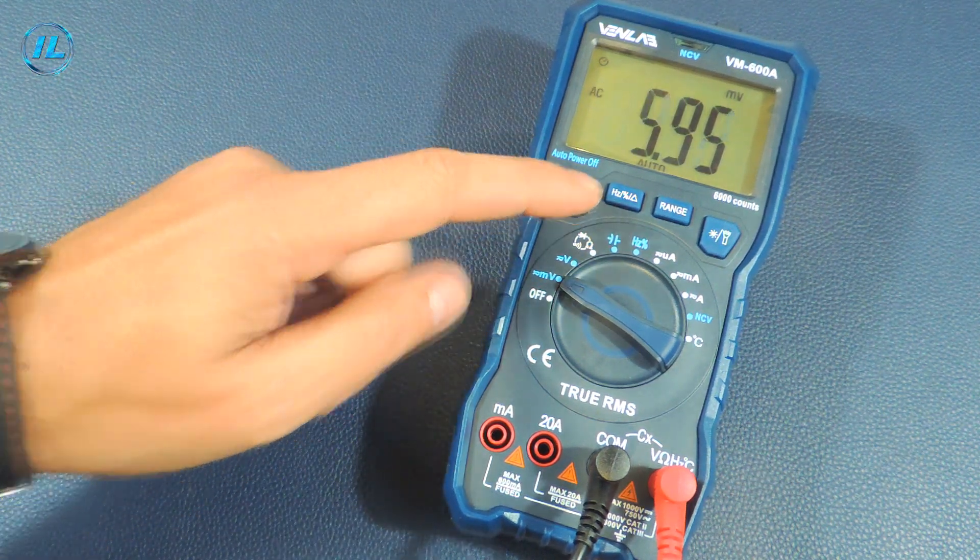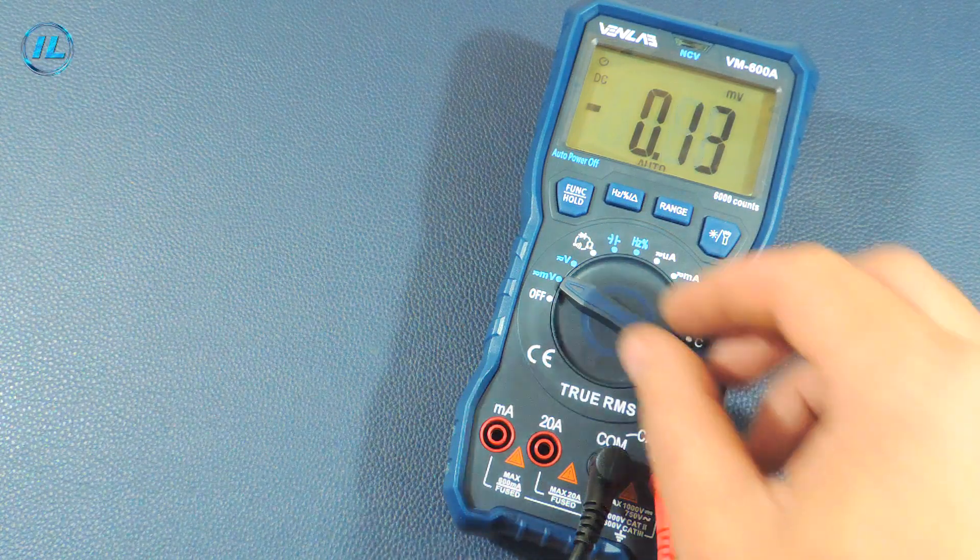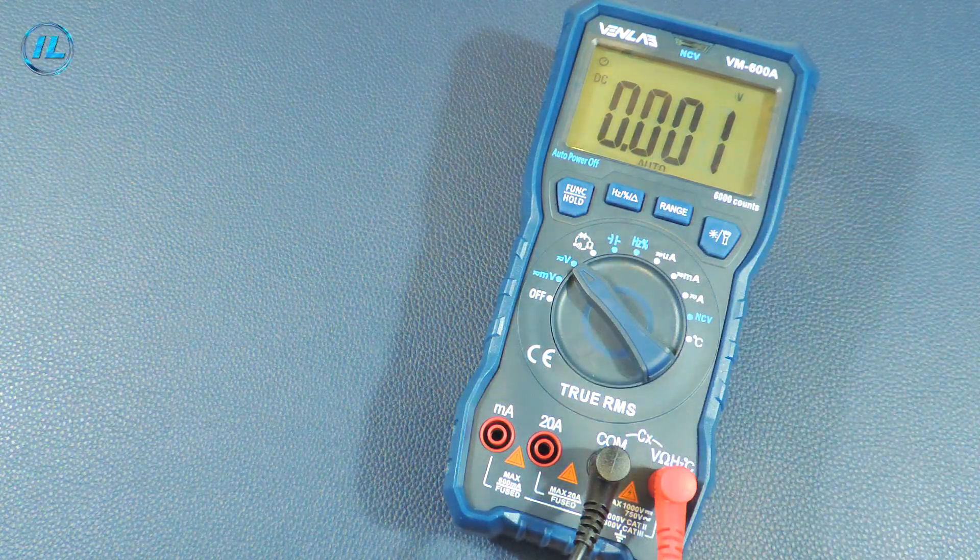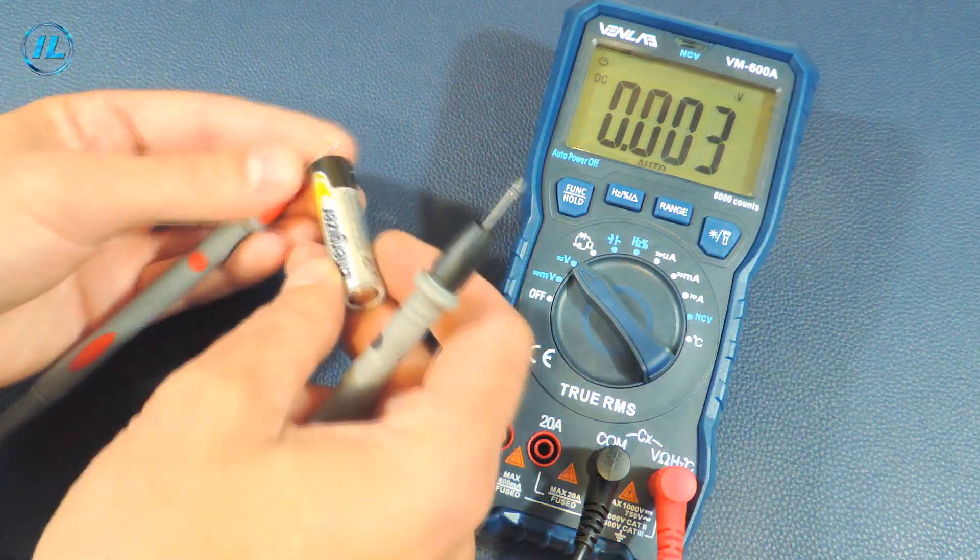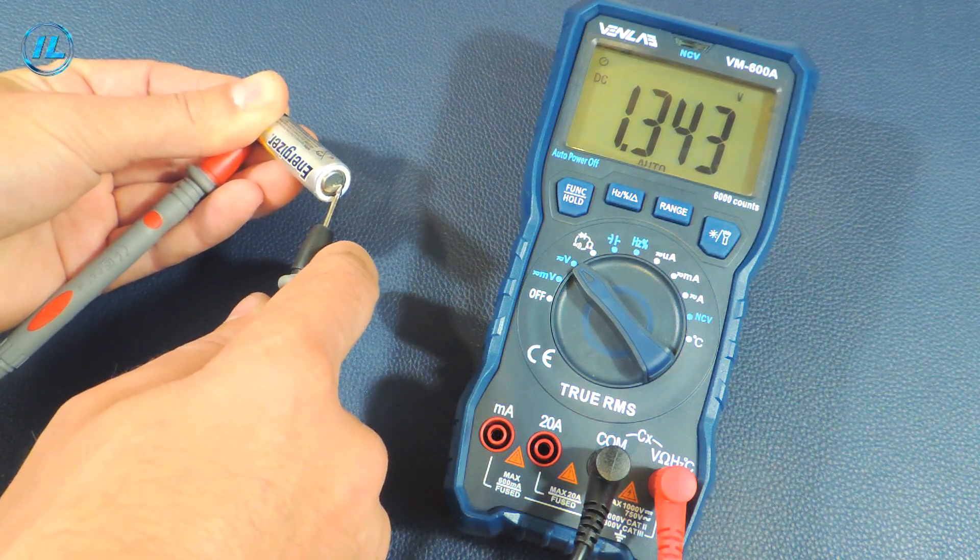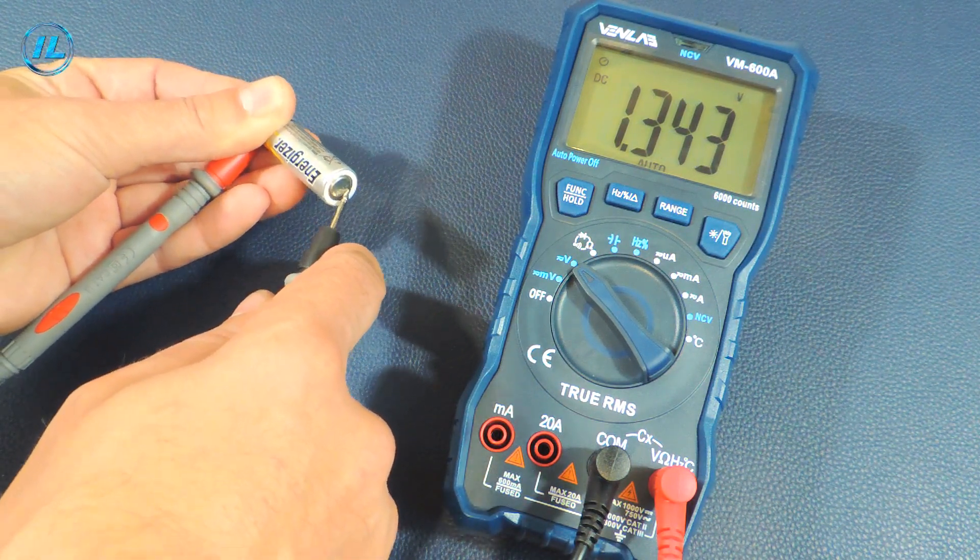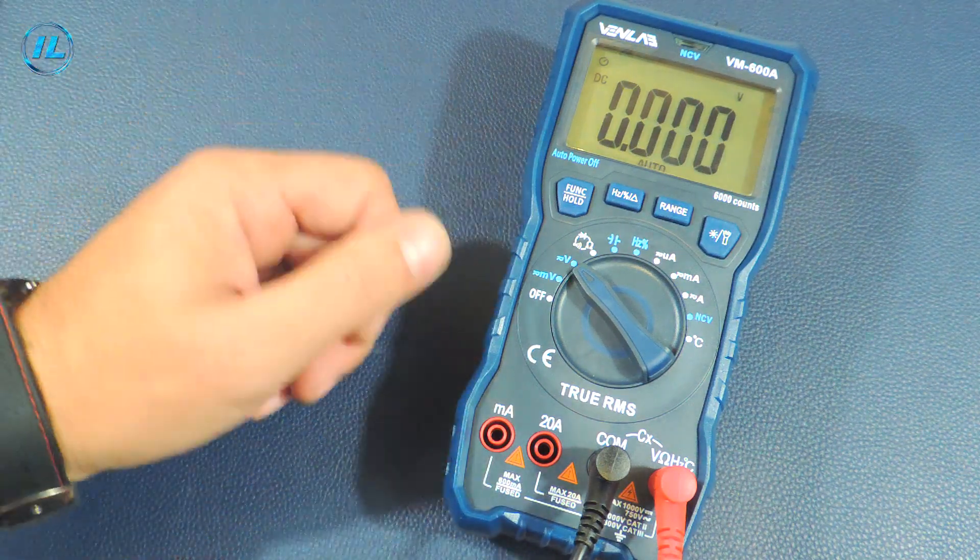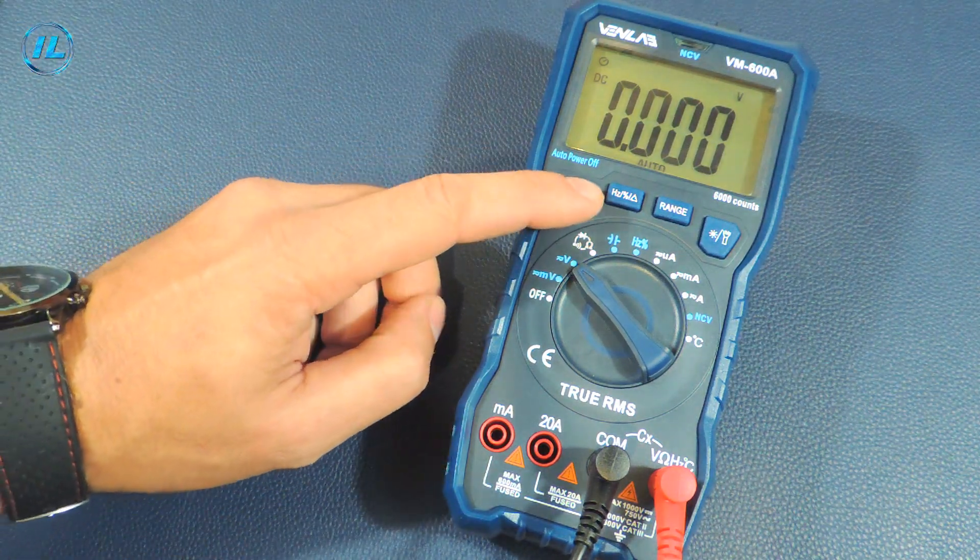The next mode is voltage measurements. The battery voltage is 1.34 volts. To measure the AC voltage you need to press the function button.